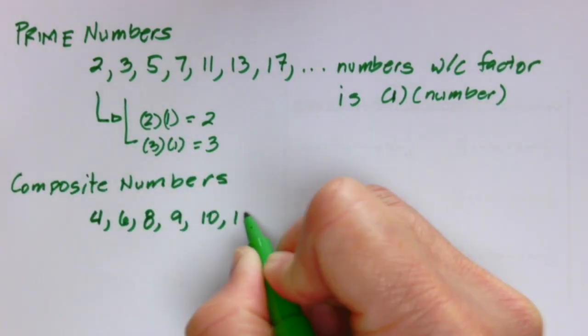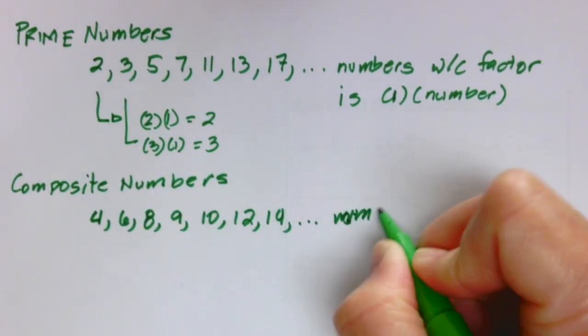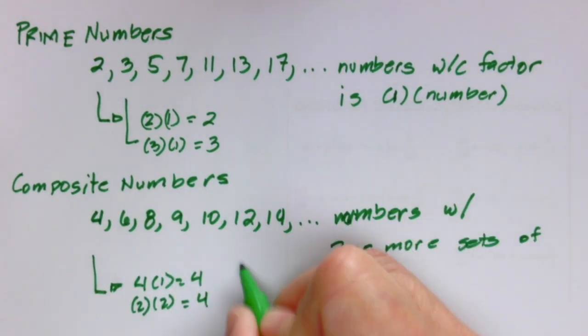Composite numbers are numbers that are not prime, such as 4, 6, 8, or any numbers who have more than 2 sets of factors.